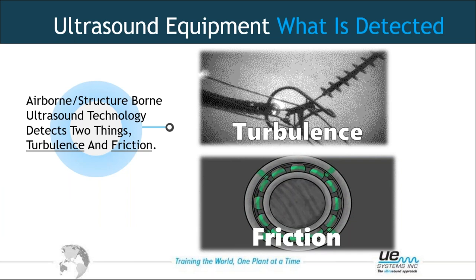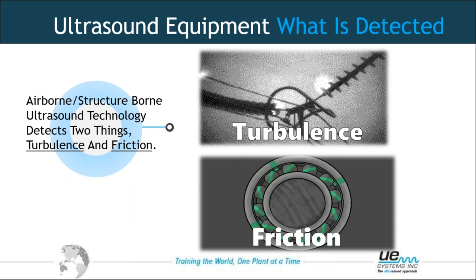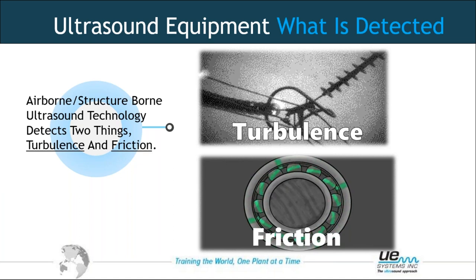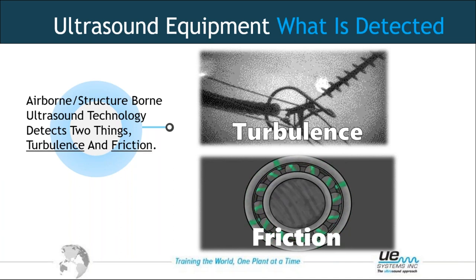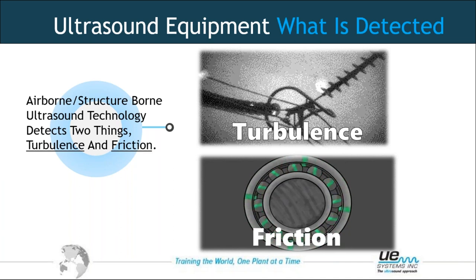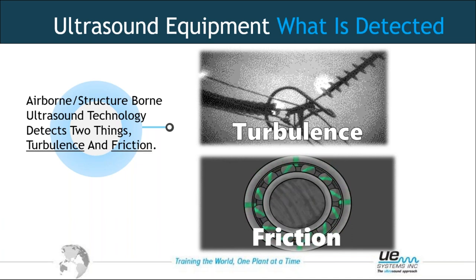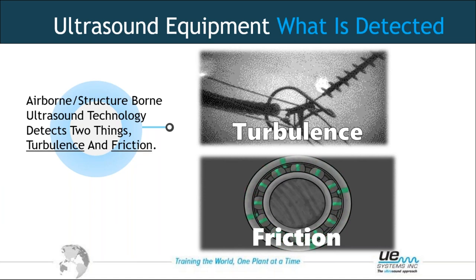What exactly are we detecting? Airborne and structure-borne ultrasound technology detect two things: turbulence and friction. Turbulence is generated in the air — for example, due to electrical discharges — and these are captured by the airborne sensors. Friction is generated in the structure by rolling elements, which is captured by our contact sensors.